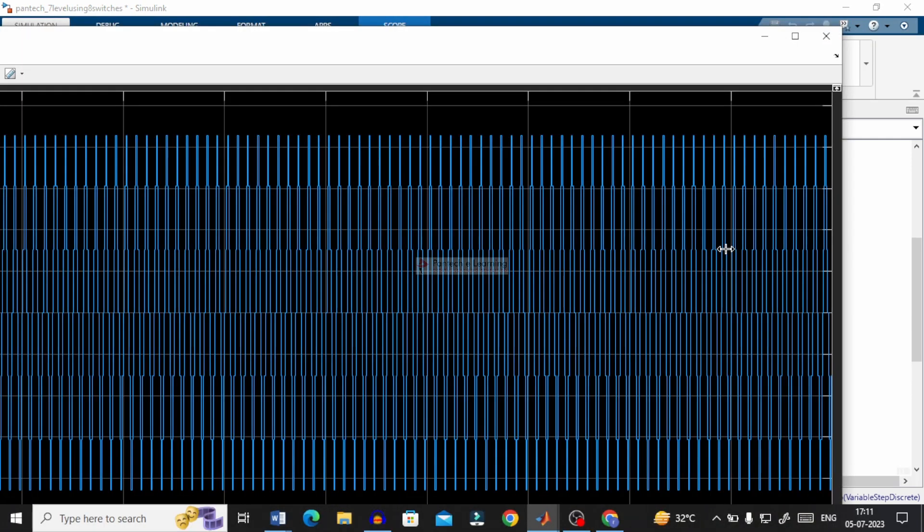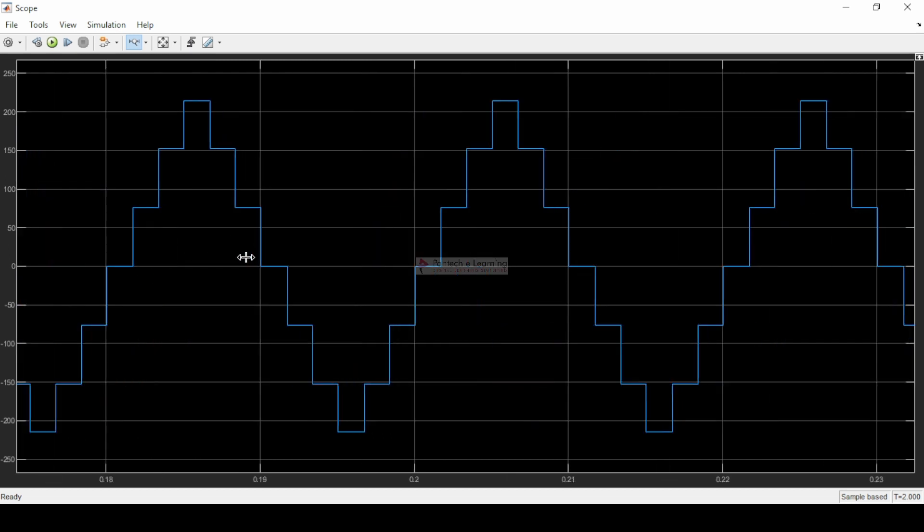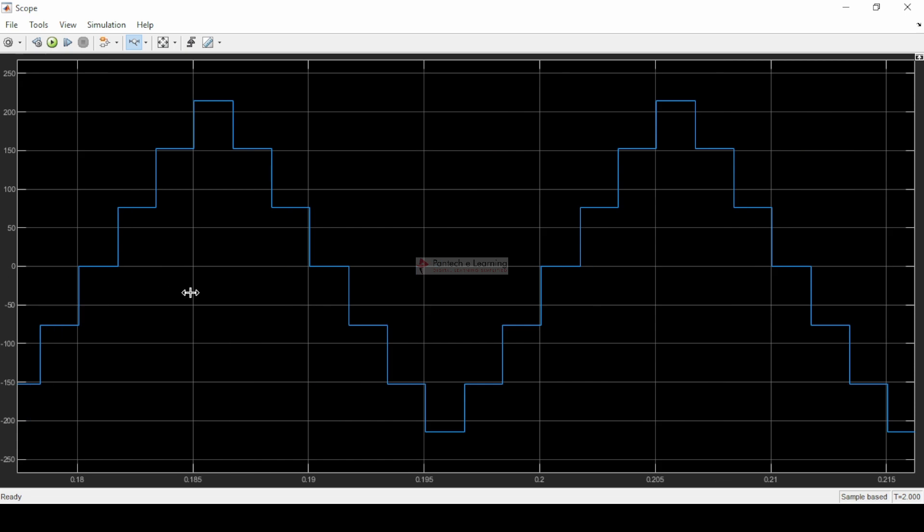Double click on the scope. This is our output waveform. So, if we take the complete one cycle from 0 to 360 degree, it consists of a positive half cycle and also the negative half cycle. This is level 1 and level 2, level 3, level 4, level 5, level 6 and level 7. So, this new seven-level multilevel inverter topology uses less number of switches than the conventional inverter topology and hence the possibility of producing higher number of levels with the same switches.